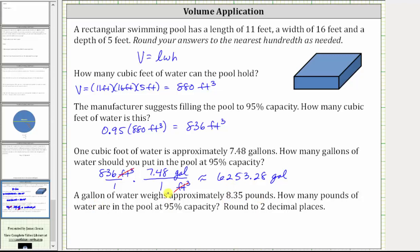Let's begin with 6,253.28 gallons as a fraction with a denominator of one. And now I multiply it by a unit fraction using the conversion. One gallon weighs approximately 8.35 pounds.